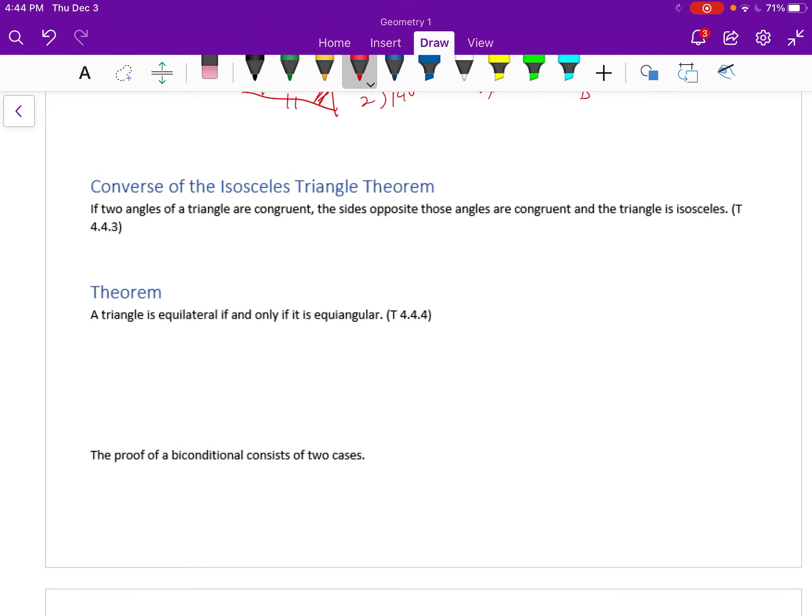There's also the converse of the isosceles triangle theorem, which says if we start and we know two angles are congruent, that also means the sides must be congruent. So that's the converse.